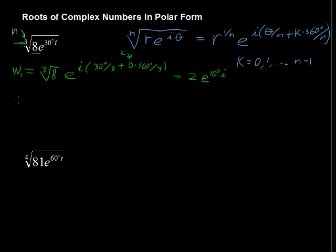Now I'll do the next one. We're going to have 3 total, and then you'll maybe see a pattern that starts to develop here. So we have the third root of 8 times e to the i times 30 degrees over 3, plus 1 times 360 degrees divided by 3. So this times k equals 1.